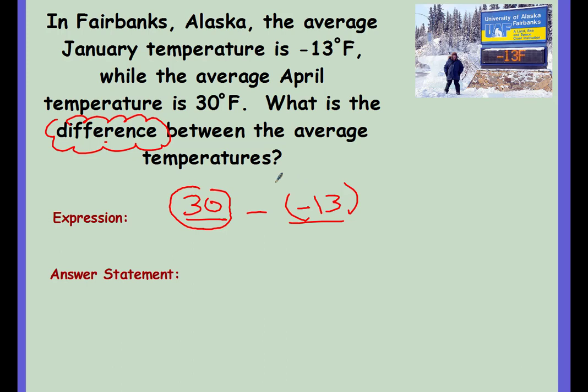If we circle, turn that double negative into a big positive, what do you notice? The signs are the same. So if the signs are the same, add them up. 30 plus 13 is 43 degrees Fahrenheit. So the difference is 43 degrees Fahrenheit, which is the answer.